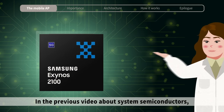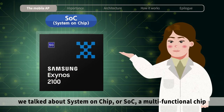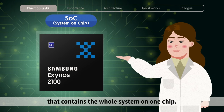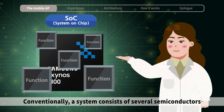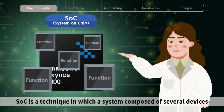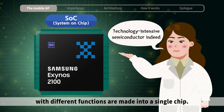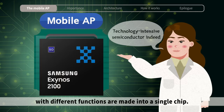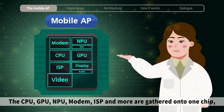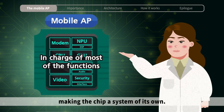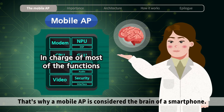In the previous video about system semiconductors, we talked about system-on-chip, or SOC, a multifunctional chip that contains the whole system on one chip. Conventionally, a system consists of several semiconductors that operate different functions. SOC is a technique in which a system composed of several devices with different functions are made into a single chip. The CPU, GPU, NPU, modem, ISP, and more are gathered onto one chip, making the chip a system of its own. That's why a mobile AP is considered the brain of a smartphone.